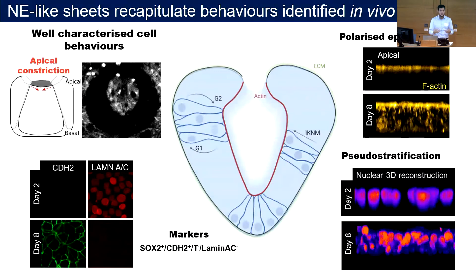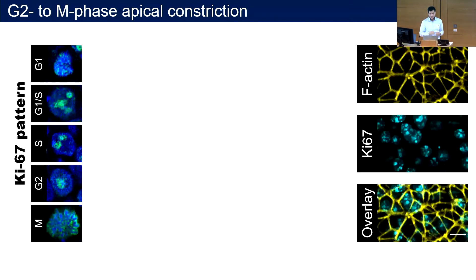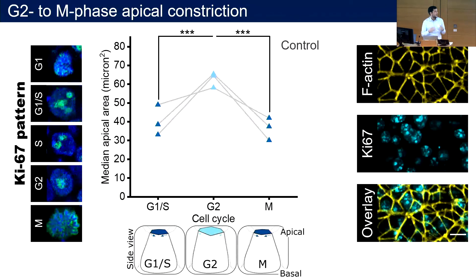Our lab has previously shown a novel cell behavior of the neuroepithelium: the synchronization of apical constriction to cell cycle progression. To validate this, we stained samples with KI67, which has a distinct pattern across cell cycle stages — in G1 we see a salt-and-pepper pattern, whereas in G2 we have a single punctum in the nucleus. Using high-resolution microscopy with F-actin and KI67 staining, we can see individual apical areas of cells alongside their cell cycle stage. We observed an increase in apical area in G2-phase cells, validated across three replicates in three independent cell lines, confirming a G2-to-M phase apical constriction.